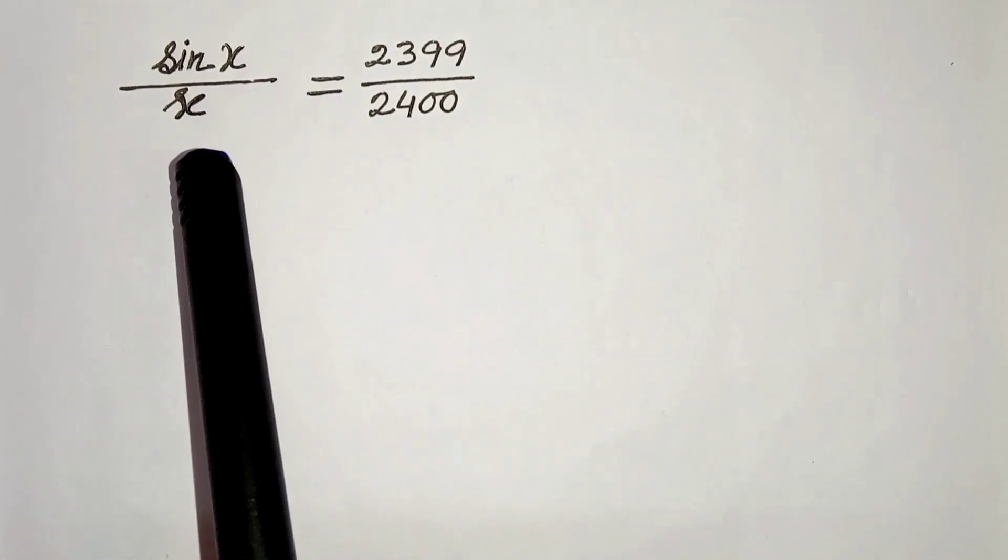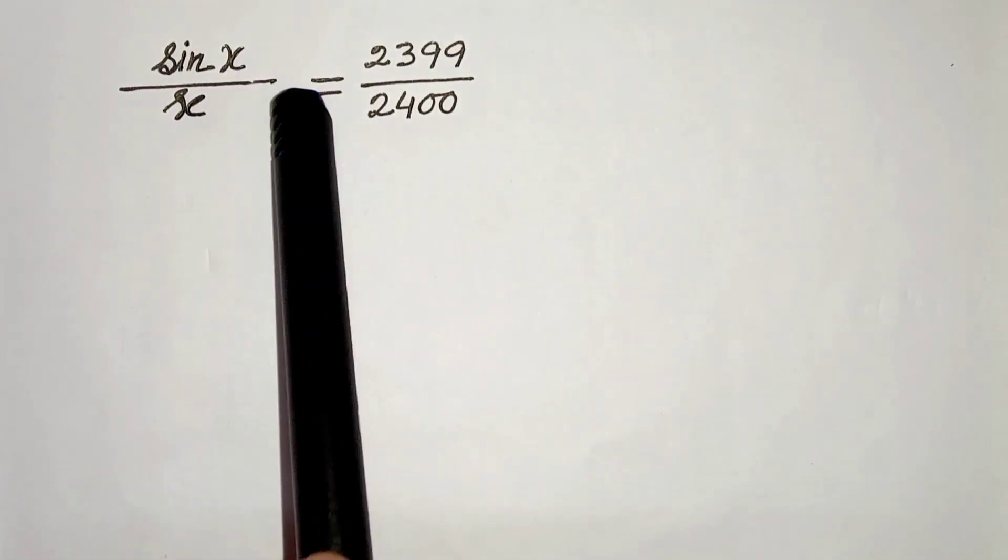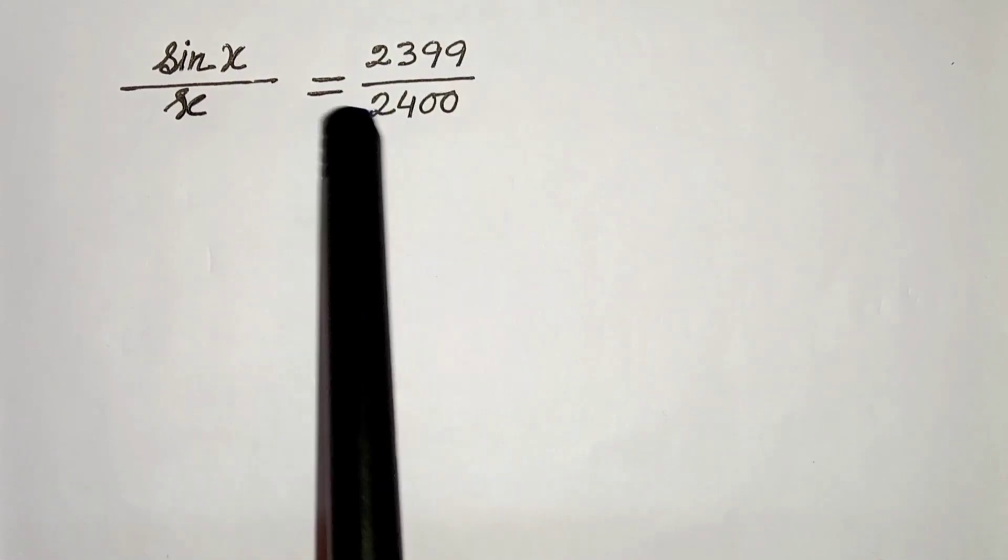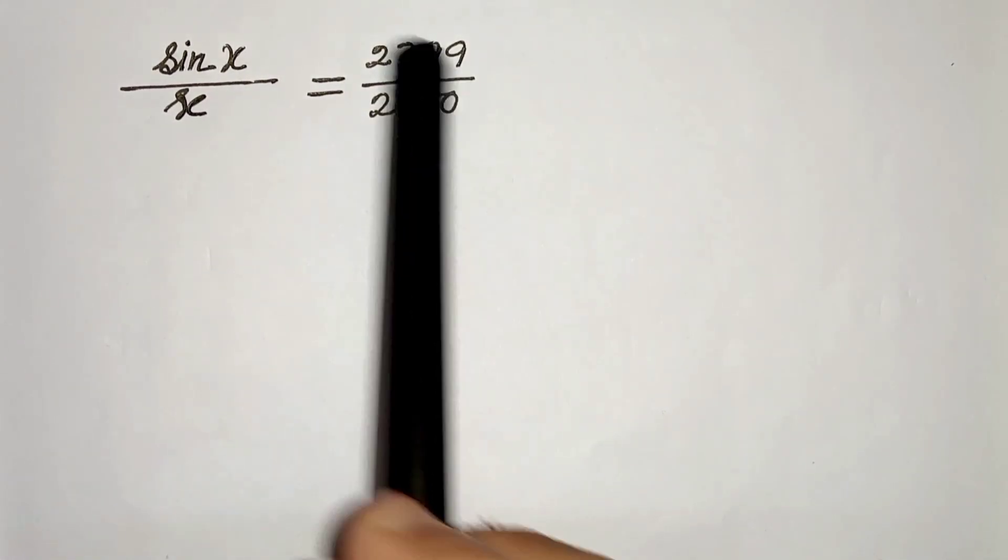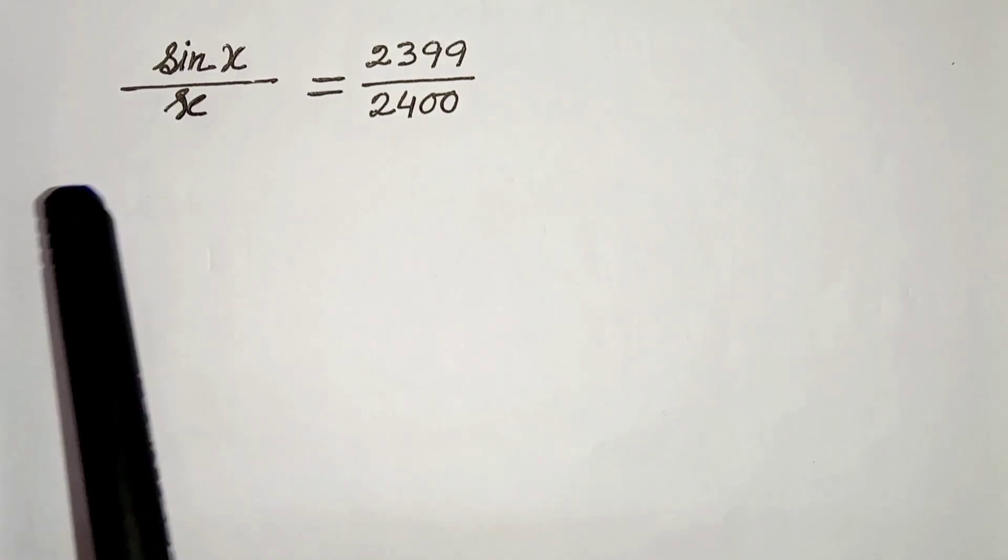Hello everyone, in this video we have sin x by x equals 2399 divided by 2400. We have to solve this and find the value of x. So let's start.